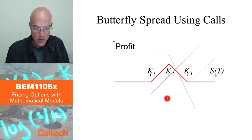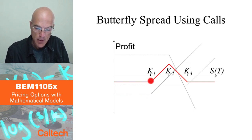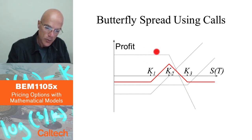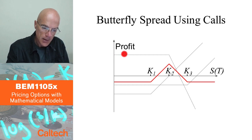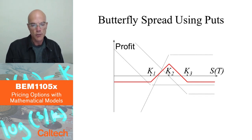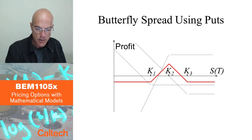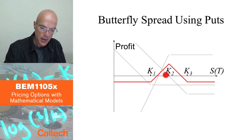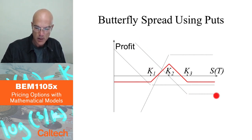You can do this using calls: go long a call with strike price K1 and long a call with strike price K3, and sell two calls with strike price K2, which is exactly in the middle of K1 and K3. This combination of three positions at three different strike prices gives you the butterfly spread payoff. You can also do the butterfly spread using puts with the same three strike prices: long put at K1, long put at K3, and short two puts at K2.